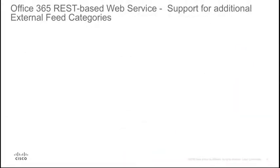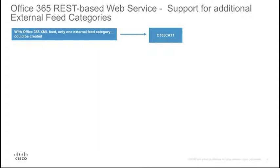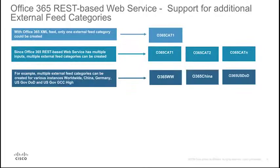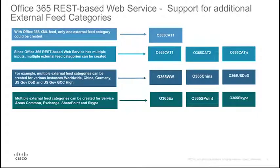How is support for Office 365 REST-based web service different from support for Office 365 XML feeds? With Office 365 XML feed, only one external live feed category could be created for all the IP addresses and URLs in the XML feed. Since the Office 365 REST-based web service accepts various inputs, multiple external live feed categories can be created. For example, multiple external feed categories can be created for various instances — Worldwide, China, Germany, US Government DOD, and US Government GCC High. Similarly, multiple external feed categories can be created for service areas — Common, Exchange, SharePoint, and Skype.